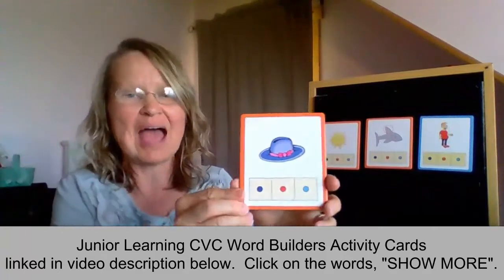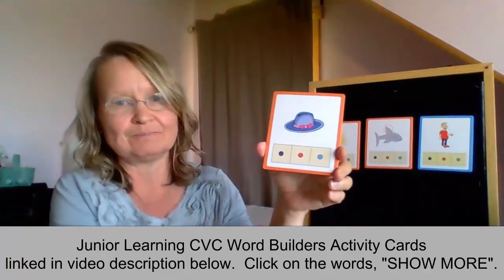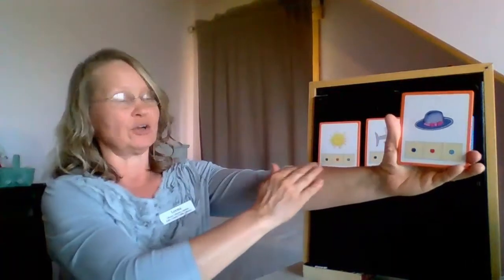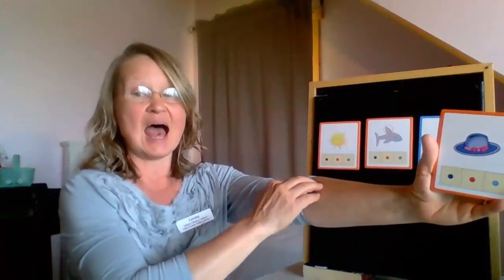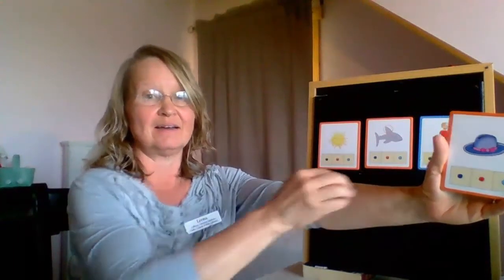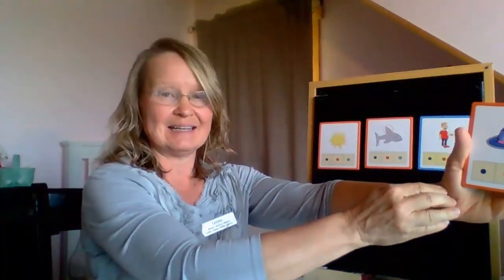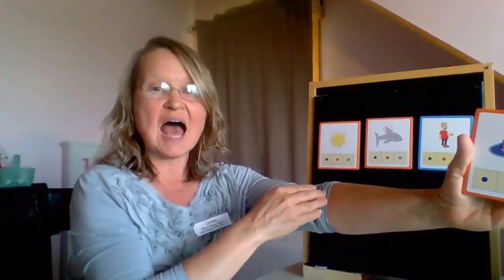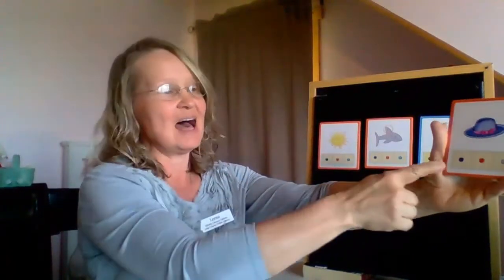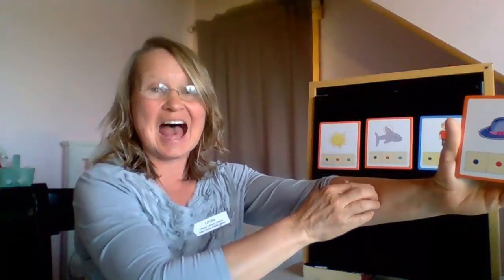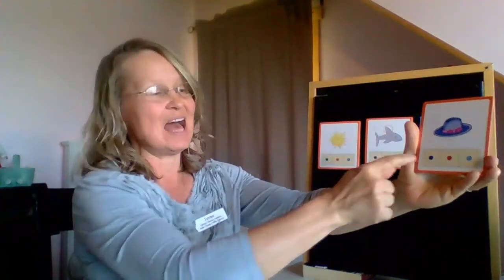It's a hat. Now hat has three sounds in it. Let's try to see if we can figure out what those sounds are. We'll do it by stretching the word on our arm. Hat. I think I heard that last sound. Hat. Did you hear the first sound? H is the first sound. Now we need the middle sound. H, A, T. Hat. Very good.